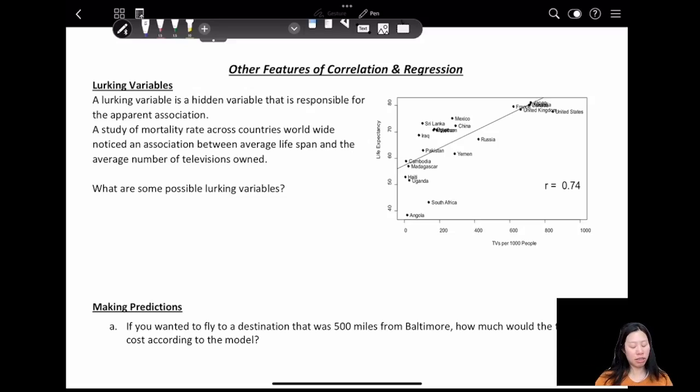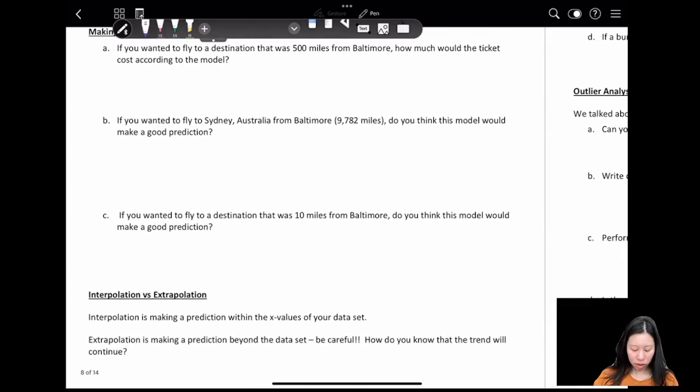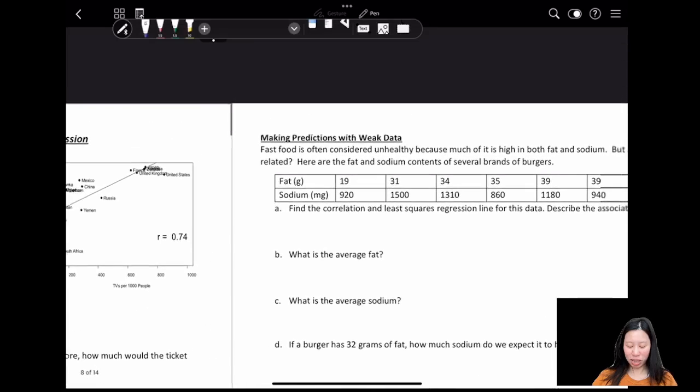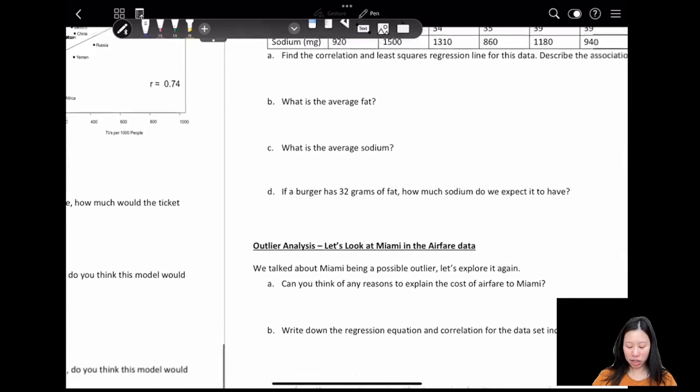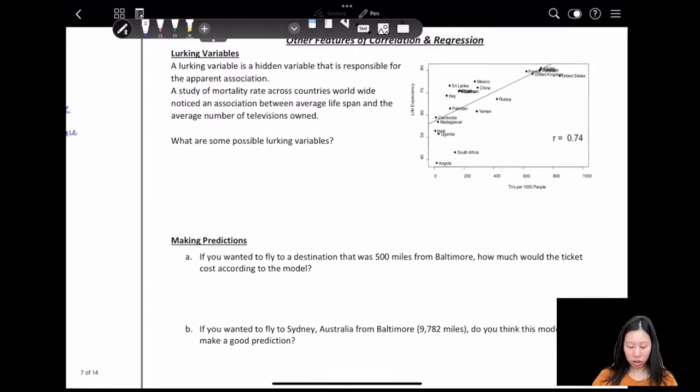Hi, welcome back to the statistics class. Today we're going to talk about other features of correlation and regression. I want to talk about lurking variables, making predictions, interpolations and extrapolations, making predictions with weak data, and outlier analysis.